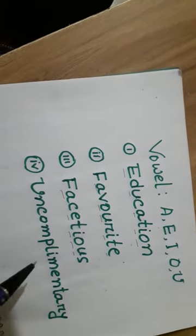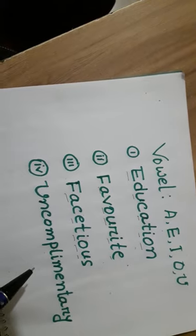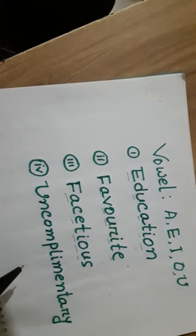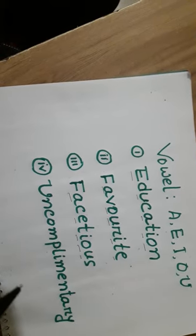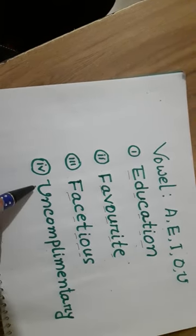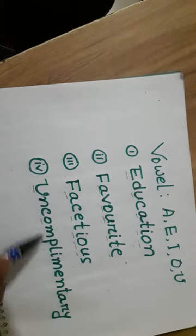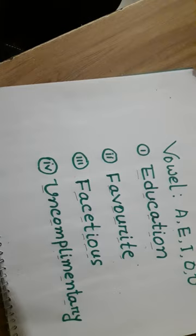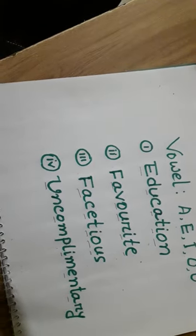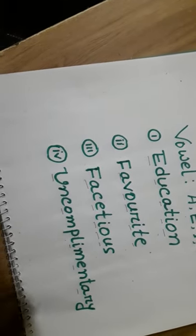And reason two continued: the fourth word, uncomplementary, has vowels in reverse system - U, O, I, E, A. So viewers, try to remember and memorize these words. Thanks for watching.